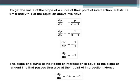To get the slope at the point of intersection, substitute x equals 0 and y equals 1 into dy/dx equals negative y over x plus 1. This gives dy/dx equals negative 1 over 0 plus 1, which equals negative 1 over 1, or simply negative 1. The slope of the curve at the point of intersection equals the slope of the tangent line passing through that point. Hence, M sub 1 equals negative 1.